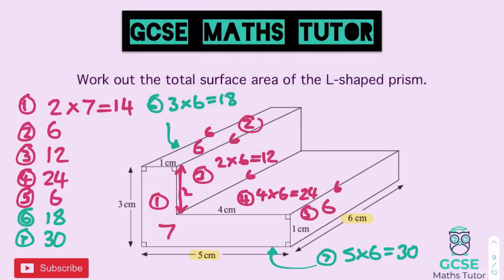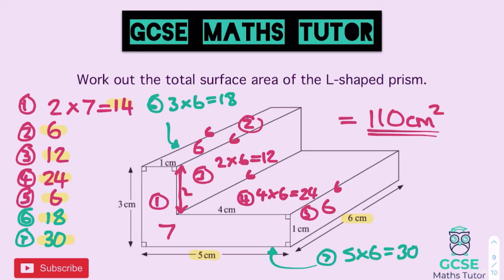Adding all the areas together: 14 plus 6 is 20, plus 12 is 32, plus 24 is 56, plus 6 is 62, plus 18 is 80, plus 30 gives us 110. So the final answer is 110 centimeters squared — the surface area of this L-shaped prism. Hopefully you managed to get that and didn't miss any faces. If you found the video helpful please like, comment, subscribe, and I'll see you next time.